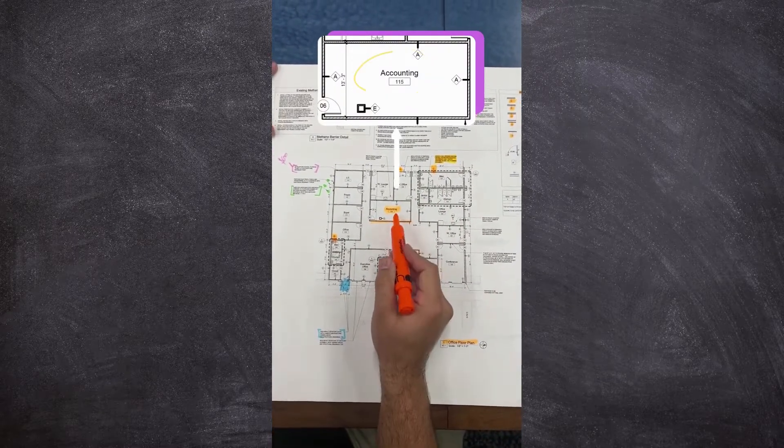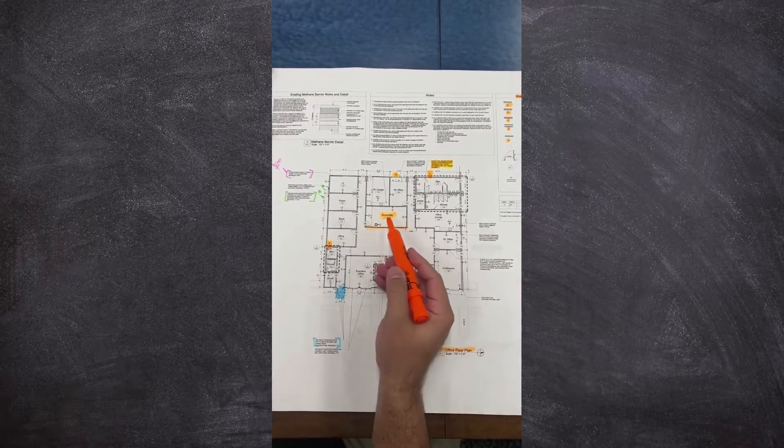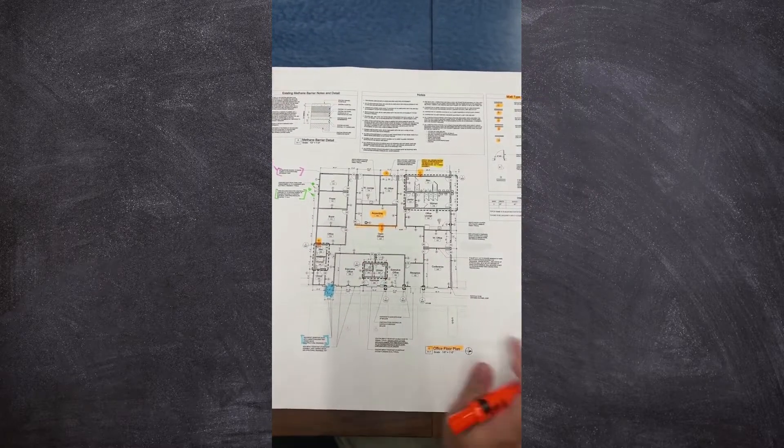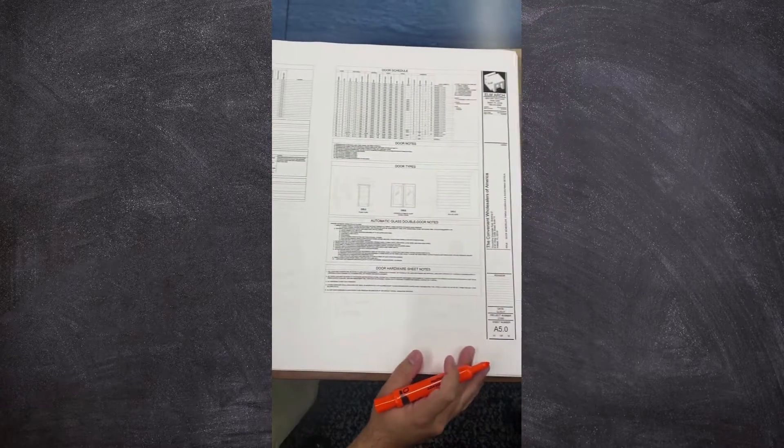You identify the room number, which is 115, and the name of the room. This will be the accounting office. From here, we're going to go to our finish schedule. On sheet A5.0, we have our finish schedule.